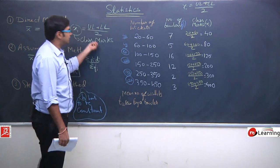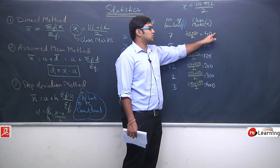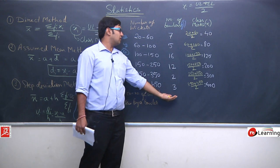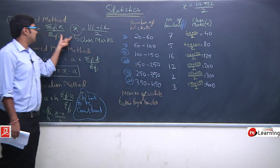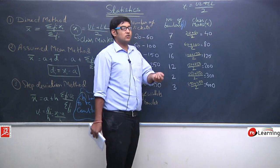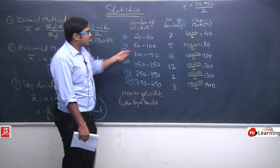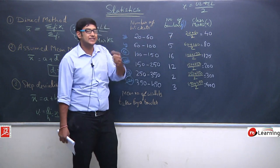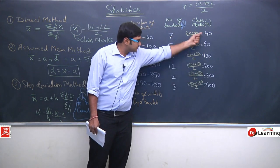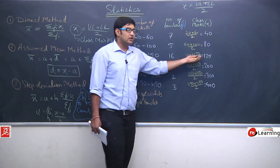We can either apply the direct method by multiplying f_i and x_i, totaling and dividing by total frequency, or we can use the assumed mean method to reduce calculation. In the assumed mean method, we select one of the class marks as the assumed mean. We have six different observations, and we can take any middle value.